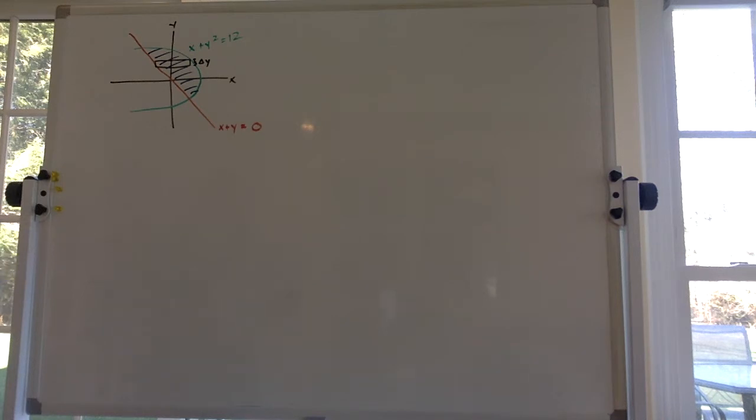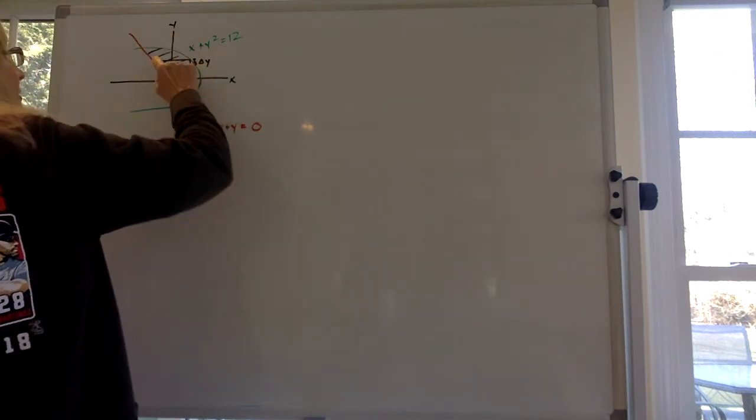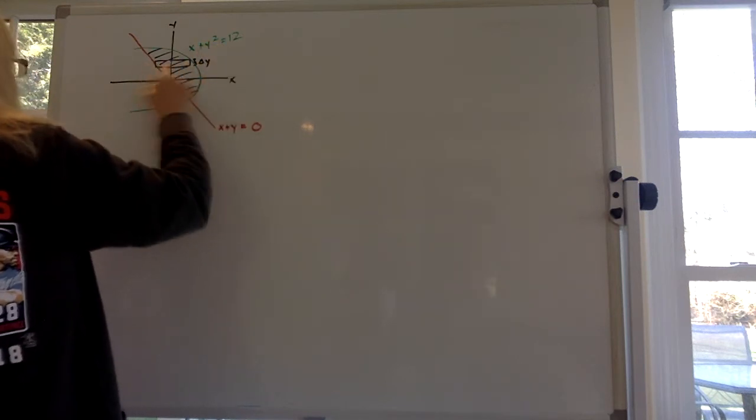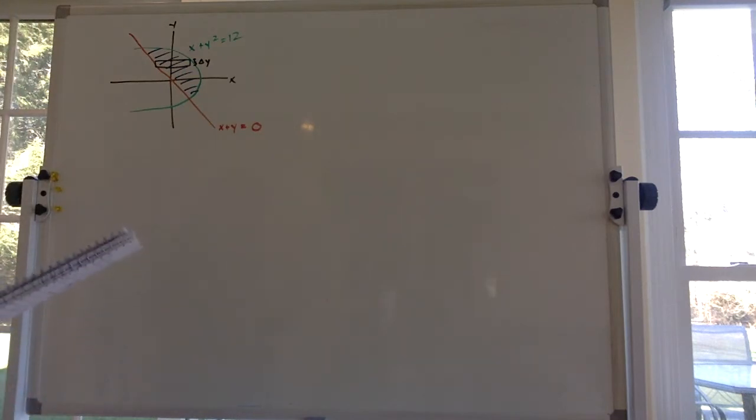So when you do left right you integrate with respect to y because if you think about it we have a bunch of little rectangles that make up this area and they all have a width of delta y and they have a certain height here that we're gonna get in terms of y. That's what we're gonna figure out what to integrate.